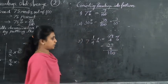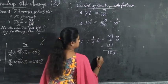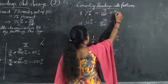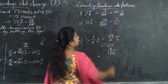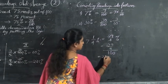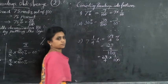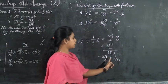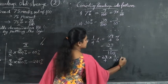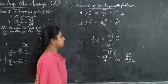So 29 by 4 percent means 29 by 4 divided by 100. This is the numerator and 100 is the denominator. You convert this as 29 by 4 multiplied by 1 by 100, which gives 29 by 400. This is the final answer.